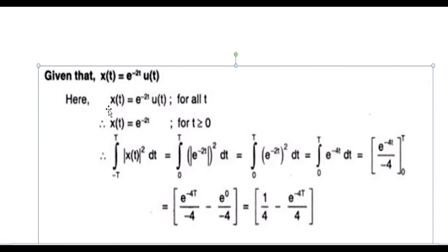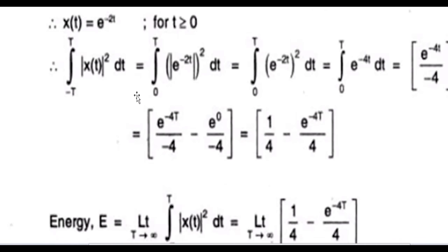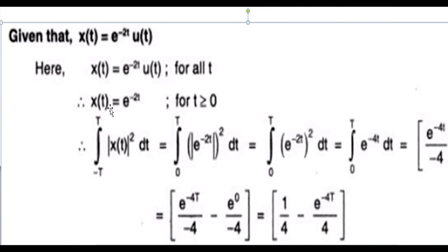So what we are trying to do here is: x(t) is my signal. What is u(t)? u(t) is nothing but a step signal. A step signal is only defined for t greater than or equal to zero. If t is less than zero, then u(t) will become zero and hence x(t) will become zero.